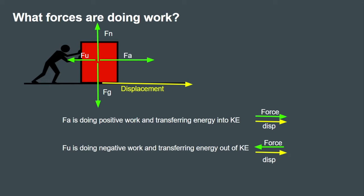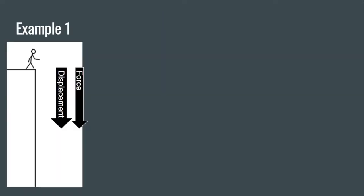A 90° angle results in zero work being done by that force. Thinking back to our definitions: positive work means an object is receiving energy from its surroundings — the person is pushing energy into the box. Negative work means giving energy to surroundings — friction takes energy from the box and converts it into thermal energy, which is part of the surroundings.